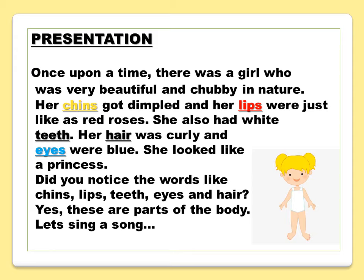Presentation: Once upon a time, there was a girl who was very beautiful and chubby in nature. Her chins got dimpled and her lips were just like red roses. She also had white teeth. Her hair was curly and eyes were blue. She looked like a princess. Did you notice the words like chins, lips, teeth, eyes, and hair? Yes, these are parts of the body.